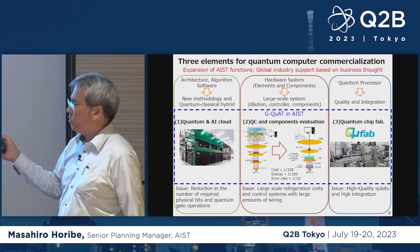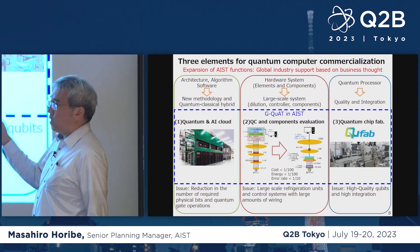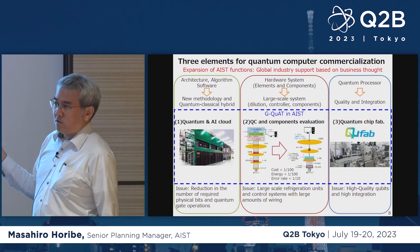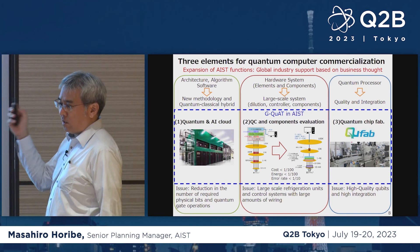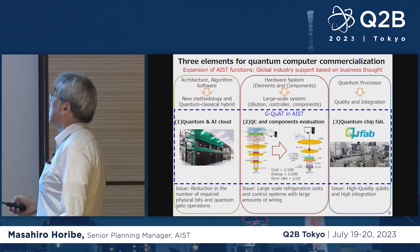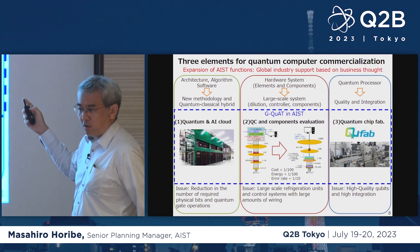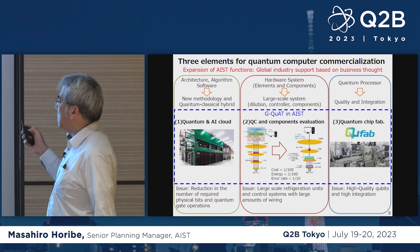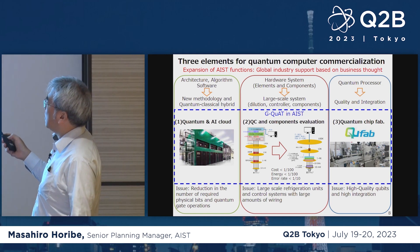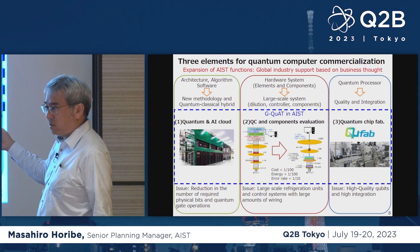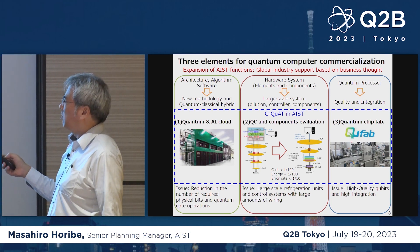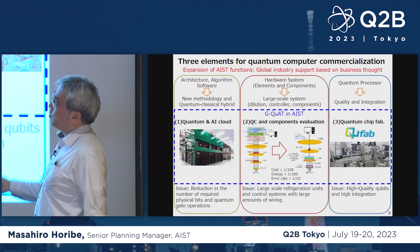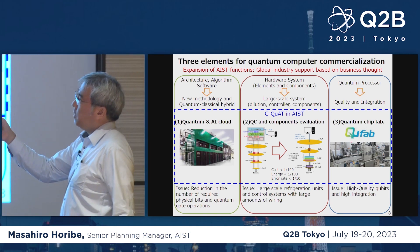The second element involves scaling to 1,000, 10,000, or 1 million qubits, which requires addressing the size of the fridge and thermal flow rate. We need to change the system from a ground-up approach, and the supply chain for that purpose is quite important. The third element is bringing the lab-level chip to production level, including production yield and performance, with constant servicing and preparation of those chips. The QFAB initiative addresses this.